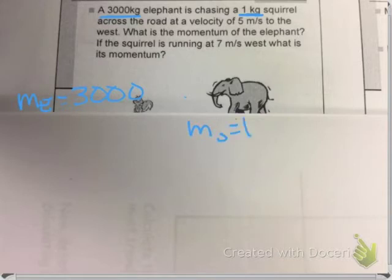Does it give us anything else? We know the velocity. The elephant is moving at a velocity of 5 meters per second. It's chasing the squirrel for some reason. The elephant is chasing the squirrel at a velocity of 5 meters per second to the west. Remember, we have to have a magnitude and a direction. The elephant is moving west. That's its direction.